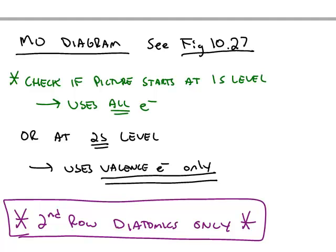Next, we want to use these molecular orbitals, whether they're bonding or anti-bonding. And there's a diagram in the textbook, figure 10.27. A word of warning, different books will use slightly different pictures.